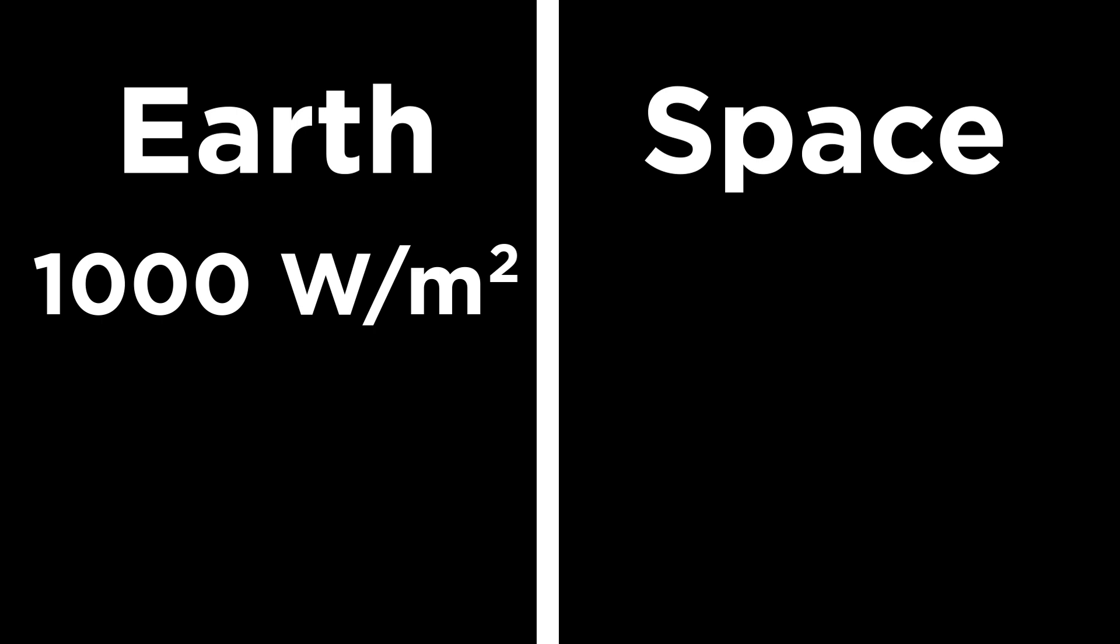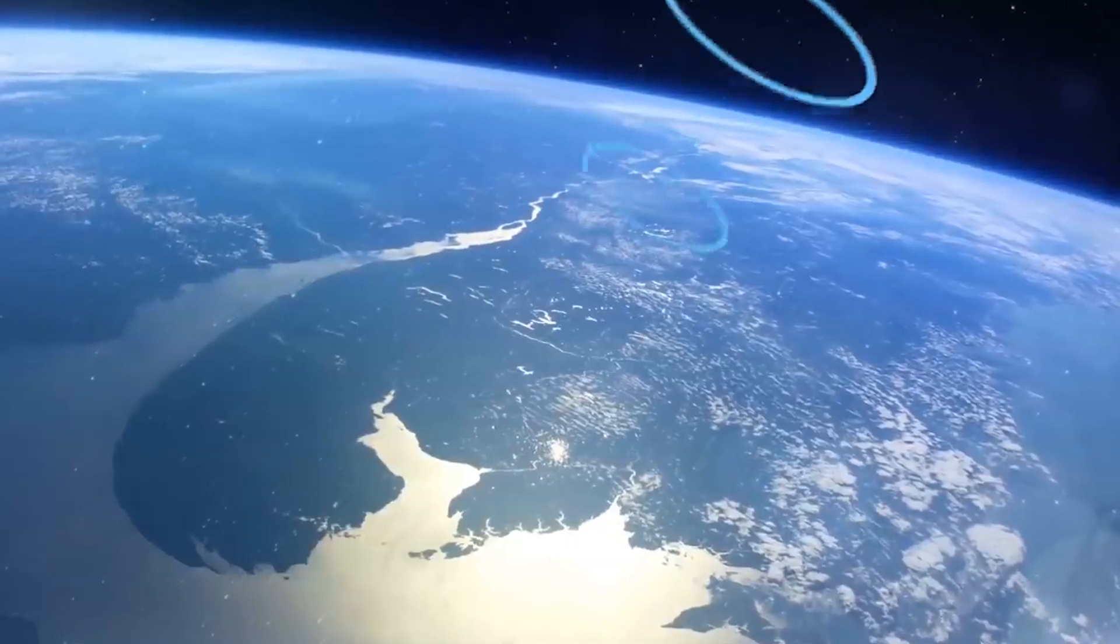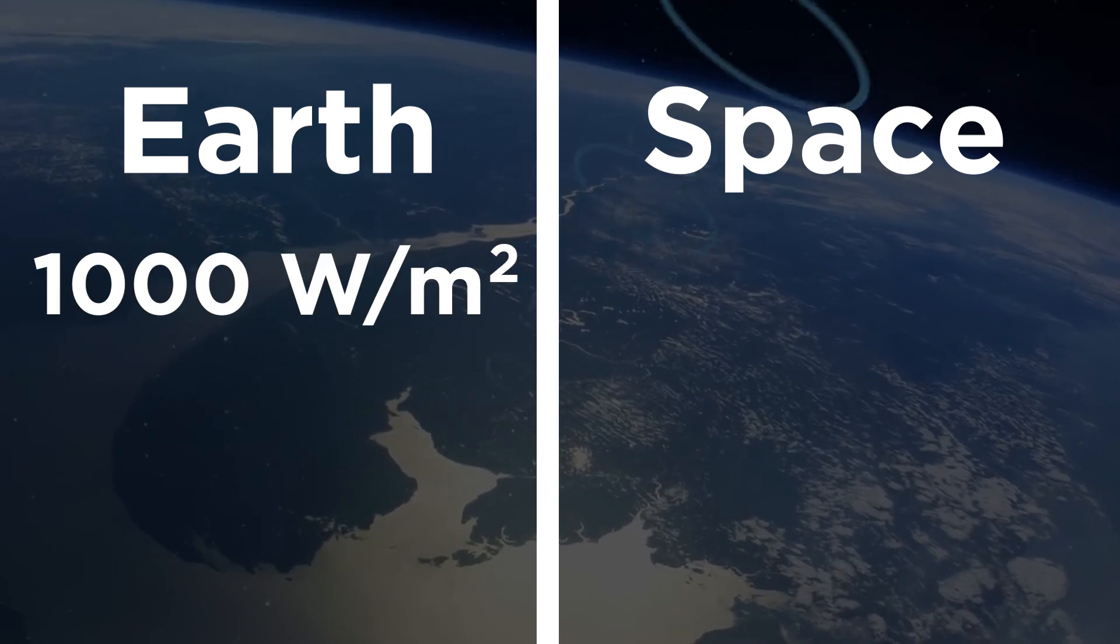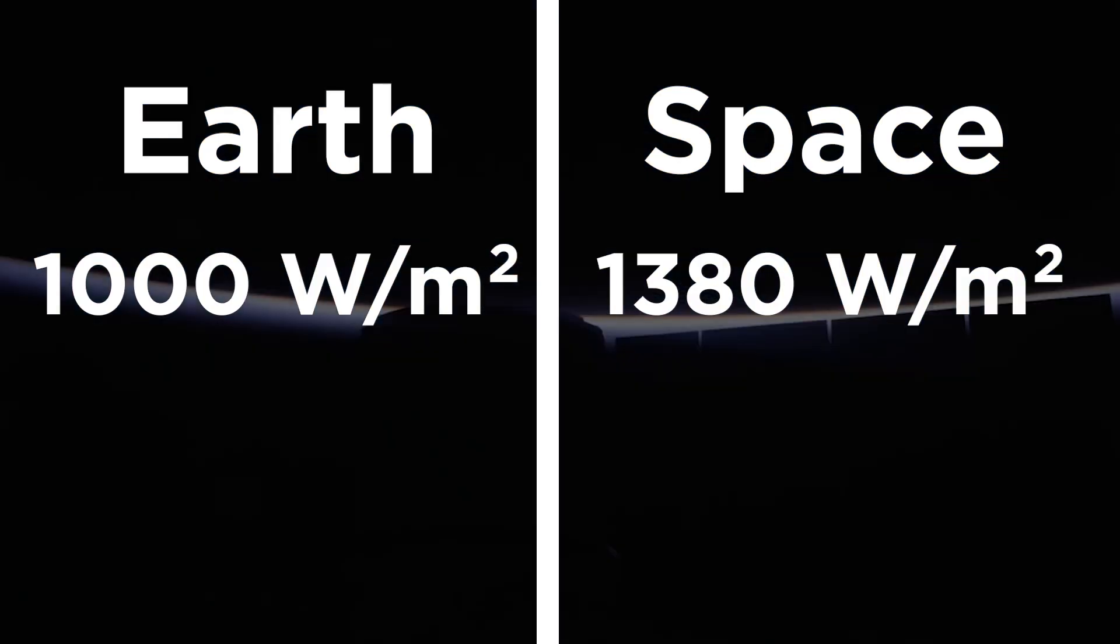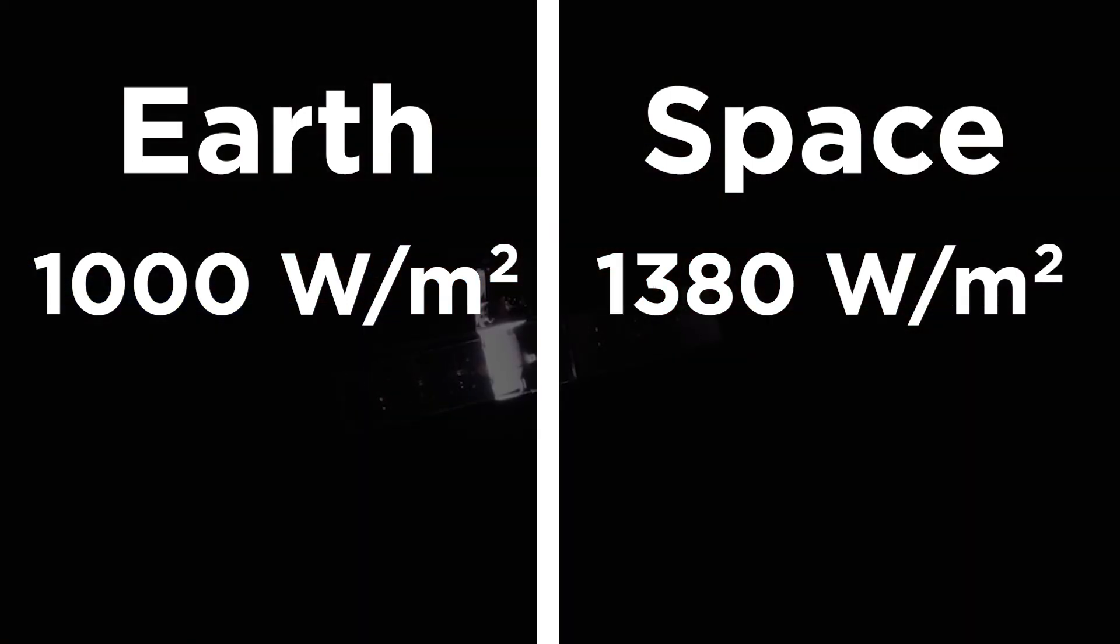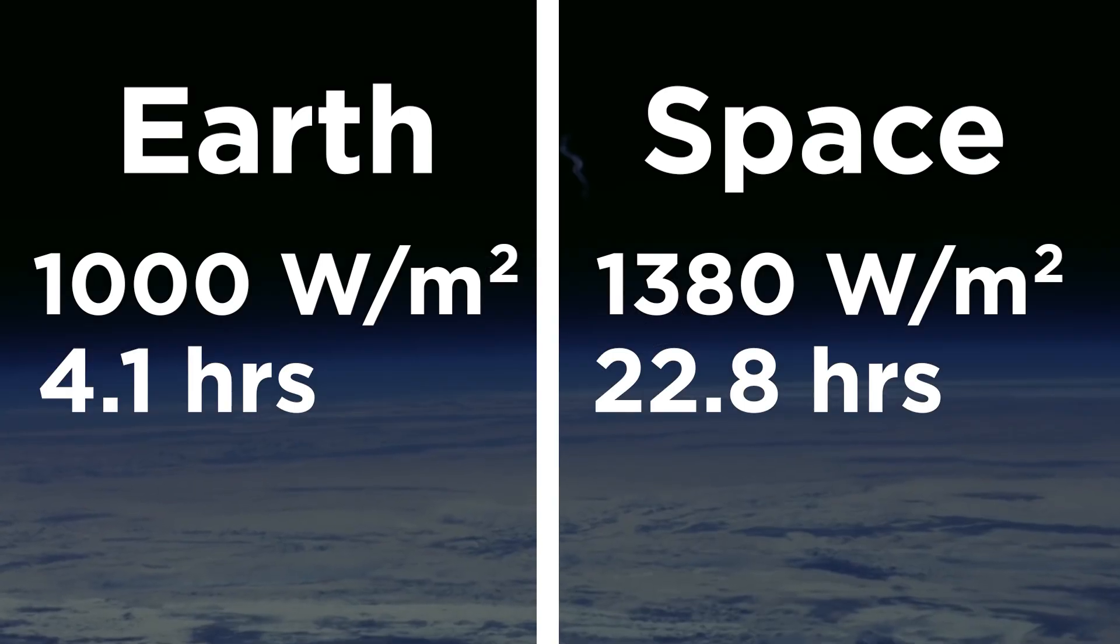In the Earth's atmosphere, solar intensity is around 1000 watts per square meter, whereas above the Earth's atmosphere it is 1380 watts per square meter. As expected, a higher light intensity will result in more power generated by the solar cells. So let's use those figures to calculate a required efficiency for transmission to Earth. Assuming the intensity of sunlight is for Earth 1000 watts per square meter and for space 1380 watts per square meter, assuming the number of sunlight hours are 4.1 for Earth and 22.8 for space.